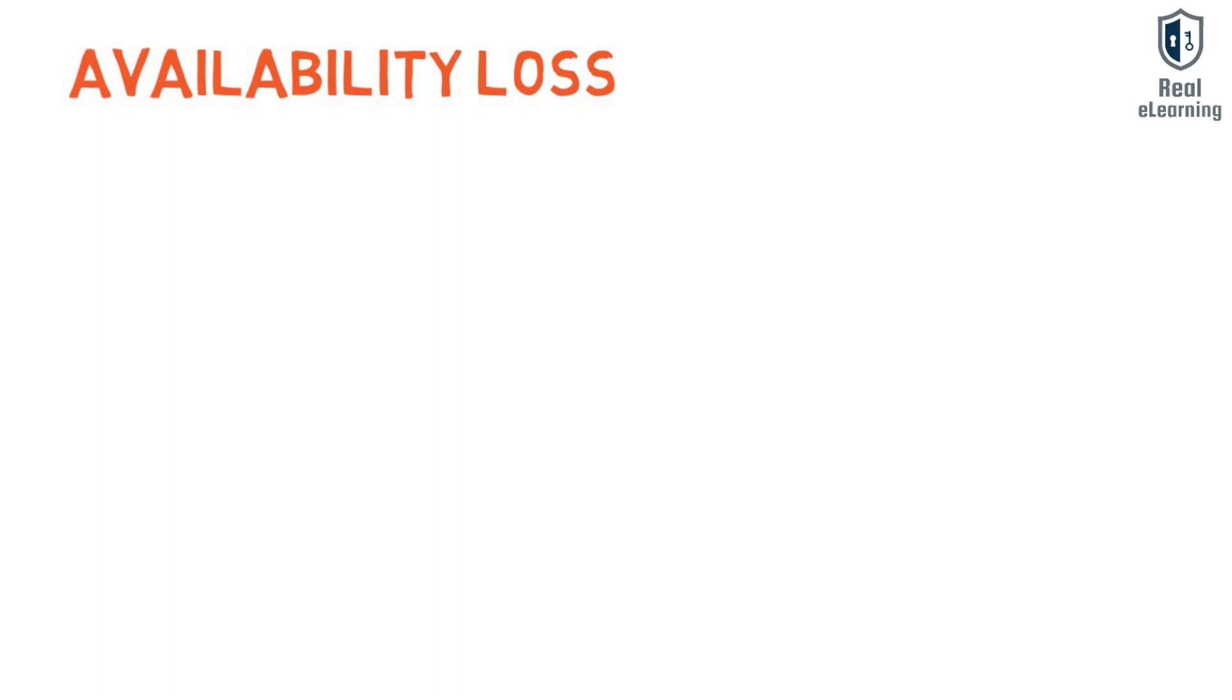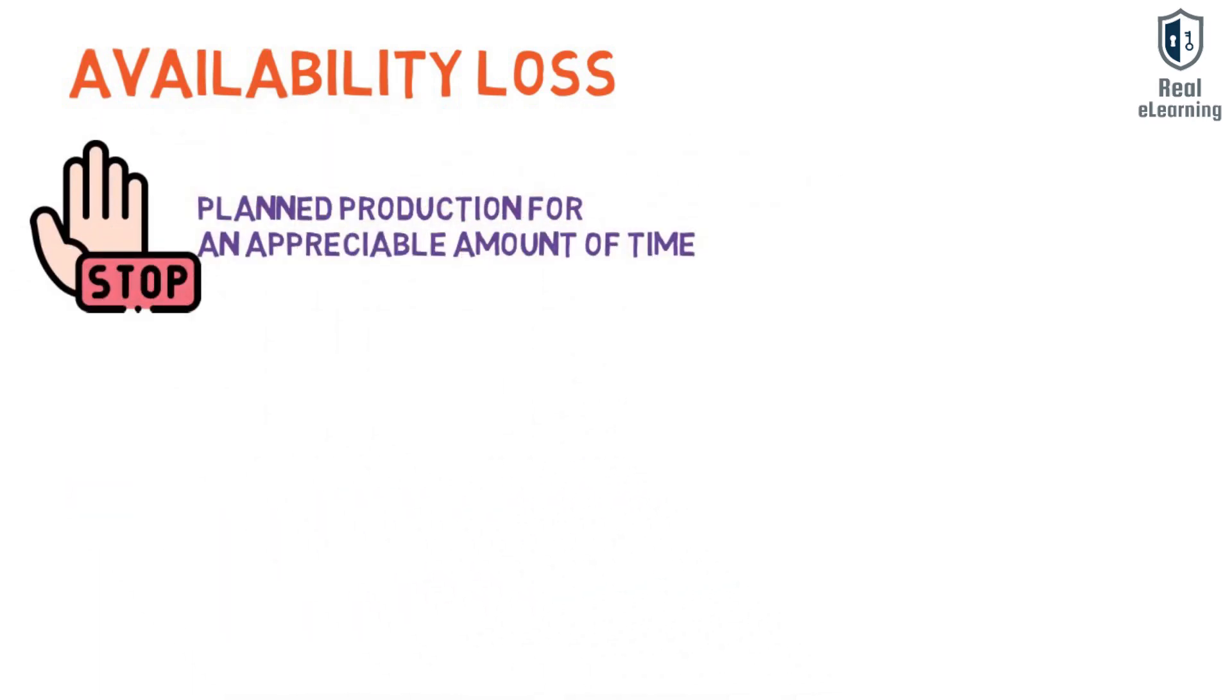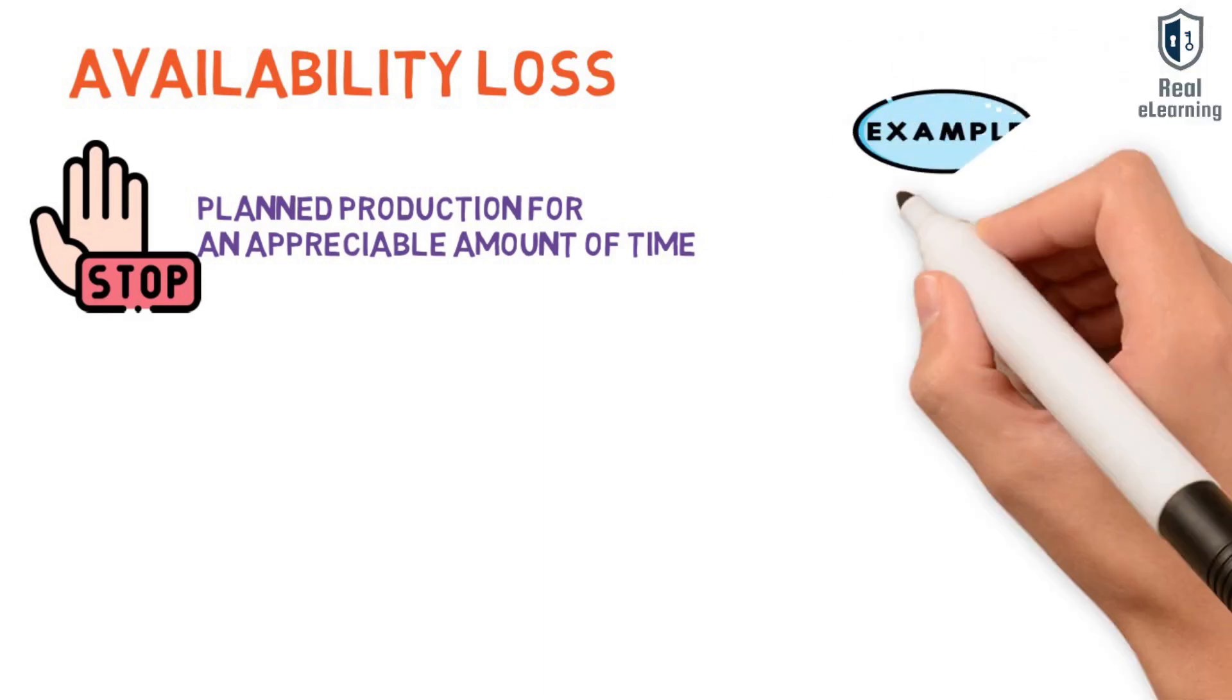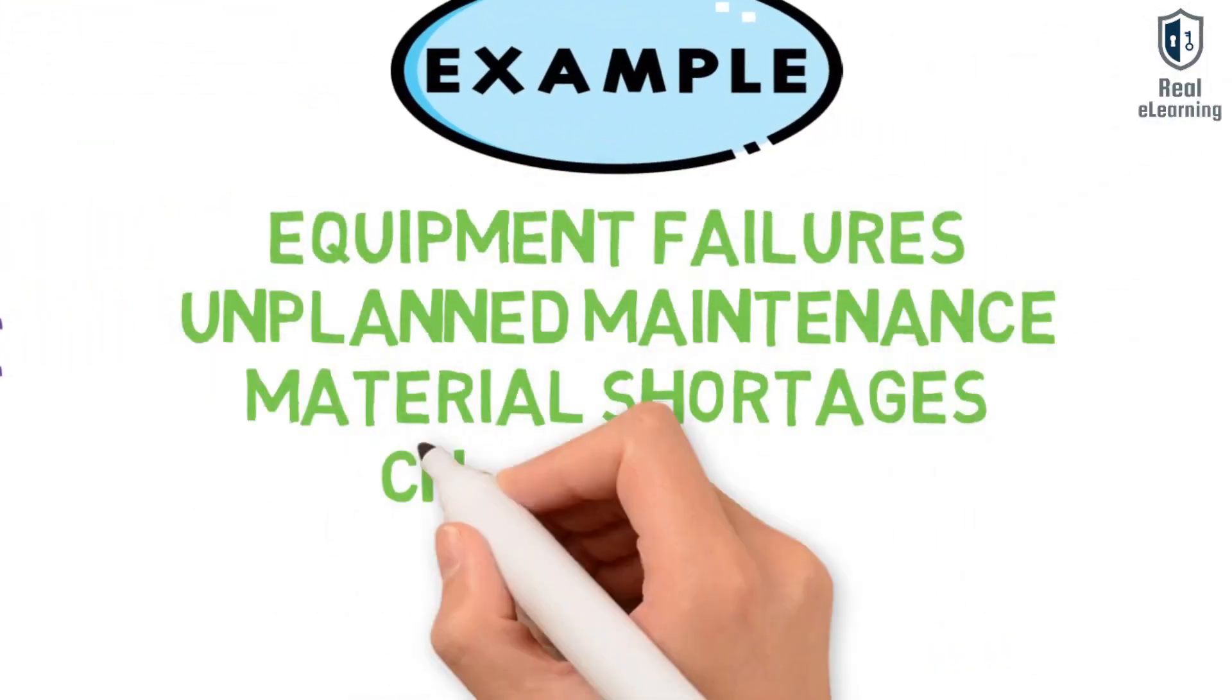Availability loss includes all events that stop planned production for an appreciable amount of time, usually several minutes. Examples include equipment failures, unplanned maintenance, material shortages, and changeovers.